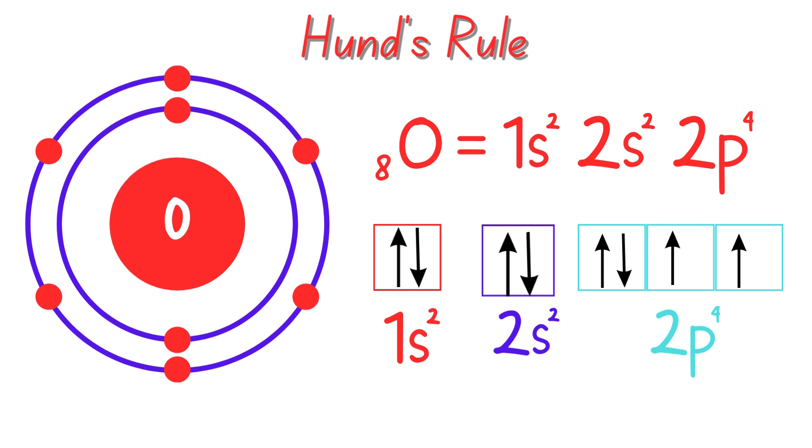So why does Hund's rule matter? Hund's rule minimizes electron repulsion. Electrons are negatively charged and they repel each other. By spreading out across orbitals, each electron stays as far apart as possible, making the atom more stable.